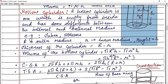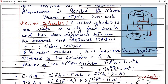Let us discuss a few terms with this hollow cylinder. Can you tell me what is the thickness of the cylinder? This part is the thickness of the cylinder. So the thickness is capital R minus small r. Now let's find the volume of the hollow cylinder. The volume of a cylinder is πr²h, so the hollow cylinder volume will be πR²h minus πr²h. And if you take out the common factor πh, you will get πh(R² − r²).